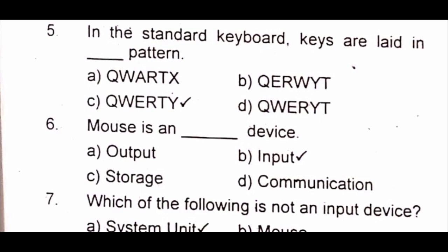Question 5: In the standard keyboard, keys are laid in a dash pattern. A) QWERTX B) QERWYT C) QWERTY D) QWERYT. The answer is C) QWERTY. Question 6: Mouse is a dash device. A) output B) input C) storage D) communication. The answer is B) input.